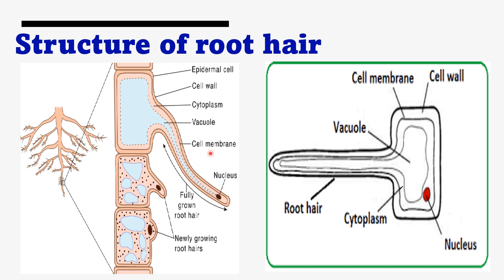These are the main labeling points for the structure of root hairs. You can also understand and draw the fully grown root hair and the newly growing root hair. In this diagram you can clearly see the cell membrane, cell wall, vacuole, cytoplasm, and nucleus. These are the important labels you need to remember for the structure of root hair.